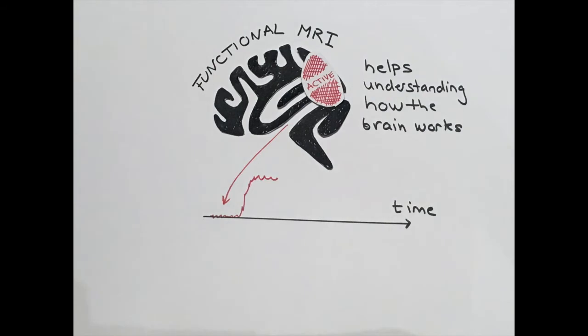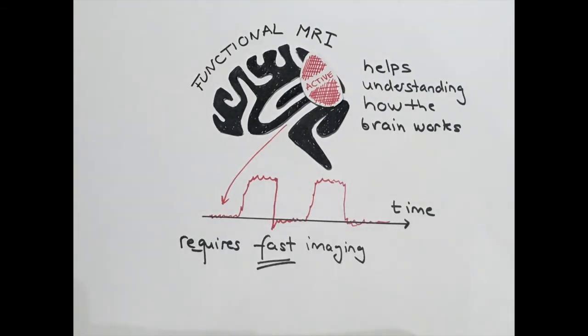For functional MRI you have to get images very quickly because you are trying to detect something that is changing over time. For this type of scan,